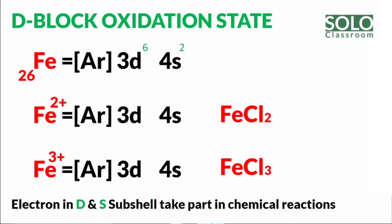Now let's talk about oxidation states. For a stable, neutral atom like iron with atomic number 26, the electronic configuration is AR-3D-6-4S-2. In chemical reactions, electrons are lost. Iron has two oxidation states: Fe2+ and Fe3+.